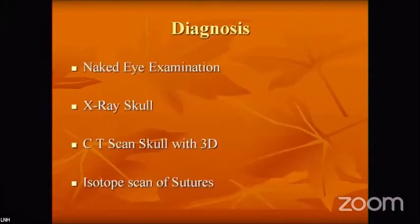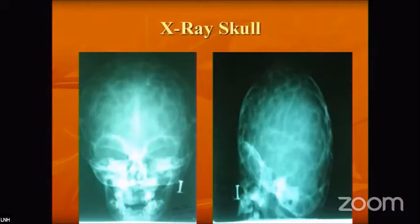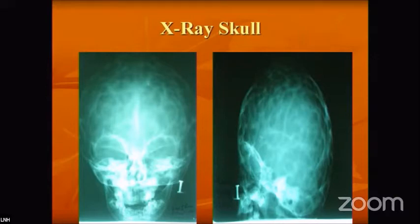Diagnosis of craniosynostosis is made by naked eye examination, X-rays, CT scan, and isotope scans for the future, though naked eye examination, skull X-ray, and CT are sufficient. On X-ray, the typical copper-beaten appearance is found if the patient presents with headache. When a child shows copper-beaten appearance, this indicates raised ICP even when fused sutures cannot be physically appreciated.